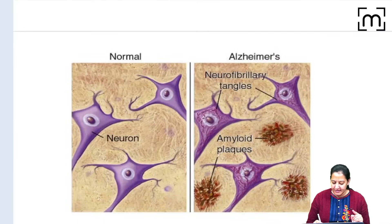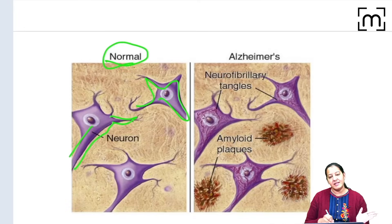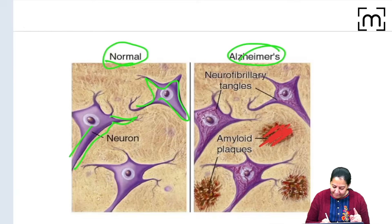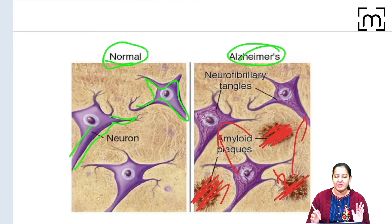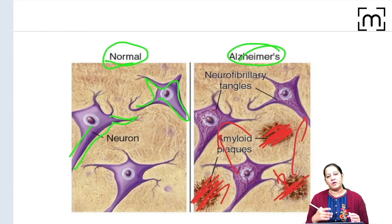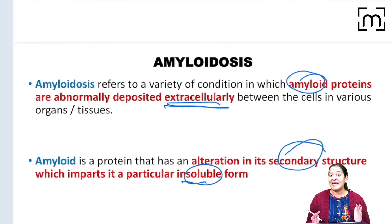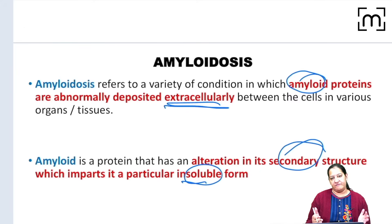In this diagram you can see the brain — a normal brain with functioning neurons. In Alzheimer's disease, the patient also has amyloidosis. Between the neurons you can see amyloid plaques deposited extracellularly, compressing the neurons and causing failure of that particular organ. So amyloidosis is a disease involving an abnormal protein called amyloid, which has a problem in its secondary structure, is insoluble, deposits in the extracellular matrix, and causes organ failure — it is a multi-organ disease.